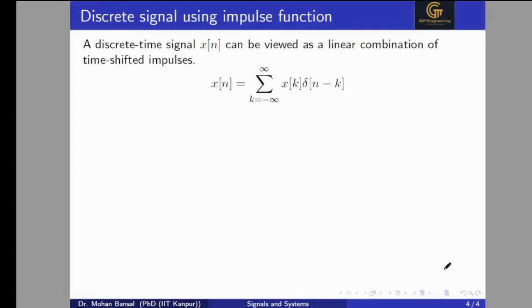Here we had only four impulses in the signal, but if we have a large or infinite number of impulses, we can still represent any discrete time signal by the linear combination of time-shifted impulses. This expression represents the linear combination of time-shifted impulses with range from minus infinity to infinity.